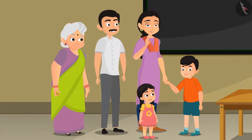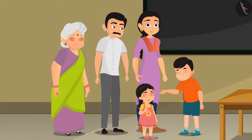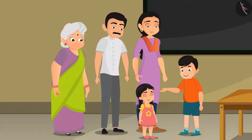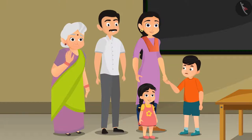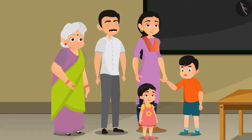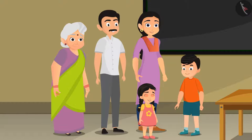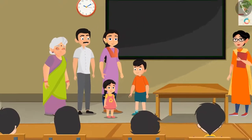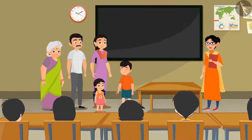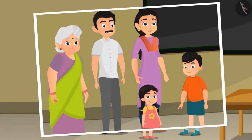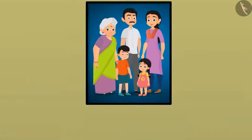Her name is Kavita. This is my younger sister, her name is Deepika — we affectionately call her Deepu. And this is my grandmother; she is the eldest in the house, her name is Lalita Devi. The class was happy to meet Raju's family. Before leaving school, they got a family picture clicked and came back home.